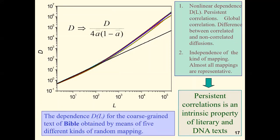The dependence D on L for coarse graining text of Bible obtained by means of five different kinds of random coarse graining. Our conclusions for this simulation are the following: We see the nonlinear dependence D on L. The correlations are persistent. The correlations are nearly global. The independence of statistical property of text of the type of coarse graining.